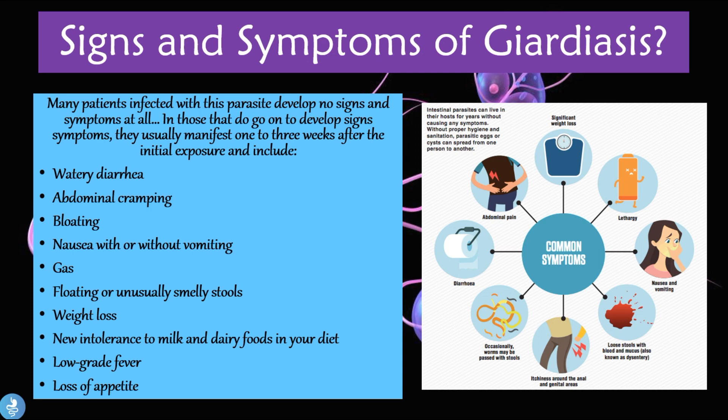Many patients infected with this parasite develop no signs and symptoms at all. But in those who do, symptoms usually manifest one to three weeks after initial exposure and include: watery diarrhea, abdominal cramping, bloating, nausea with or without vomiting, gas, floating or unusually smelly stools, weight loss, new intolerance to milk or dairy foods, a low-grade fever, and a loss of appetite.